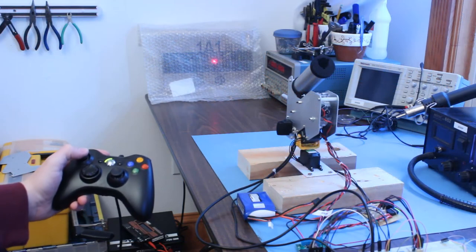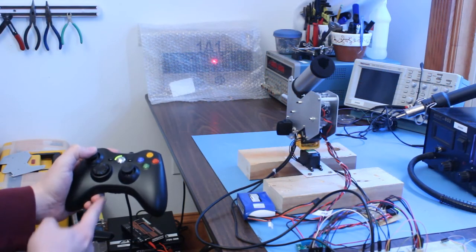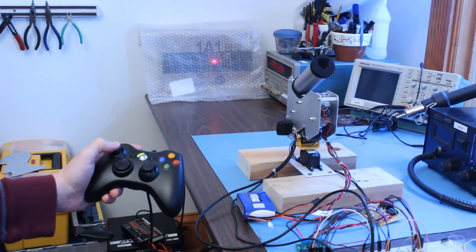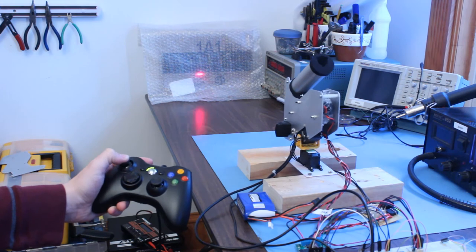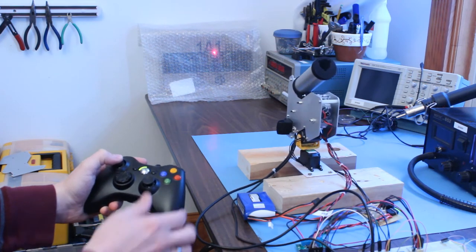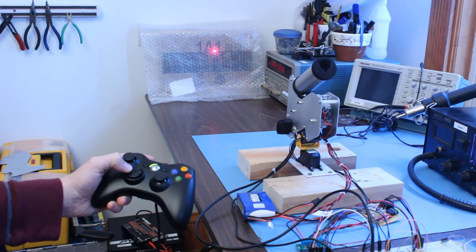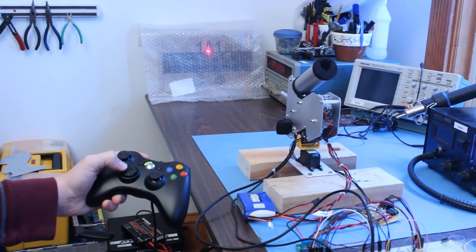We have a simple test application which uses a standard joypad to test the features of the turret. The left analog stick moves the tilt and pan axes. The D-pad controls individual steps on the pan and tilt servos for fine control.